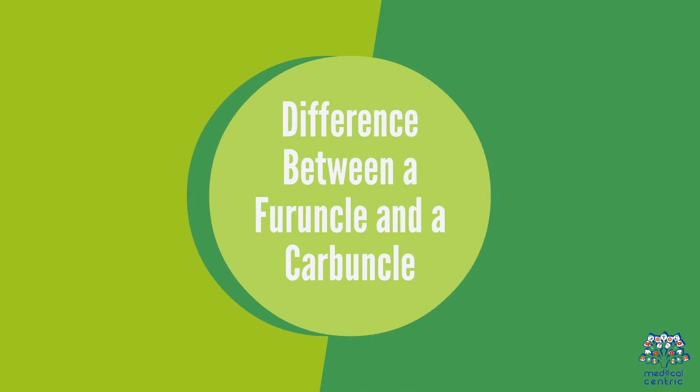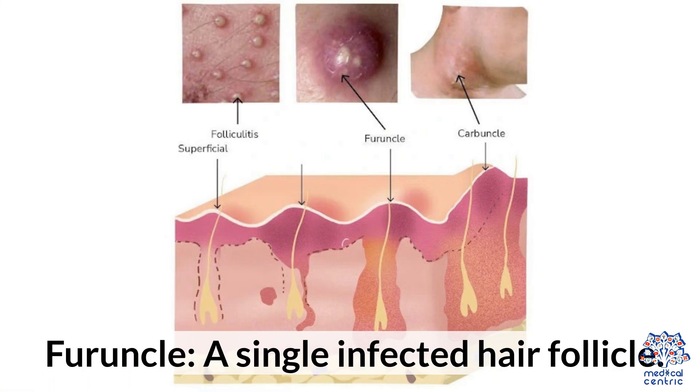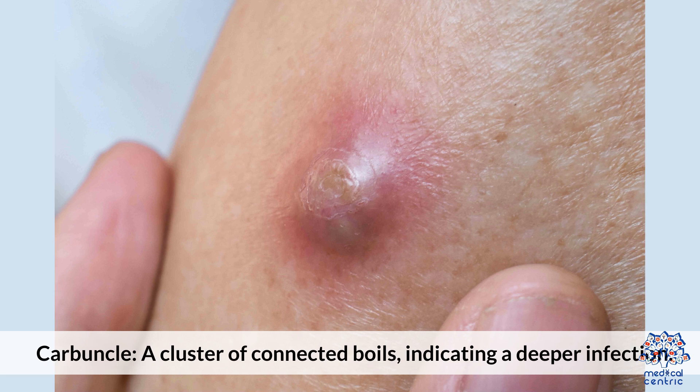The difference between a furuncle and a carbuncle: a furuncle is a single infected hair follicle, while a carbuncle is a cluster of connected boils, indicating a deeper infection.